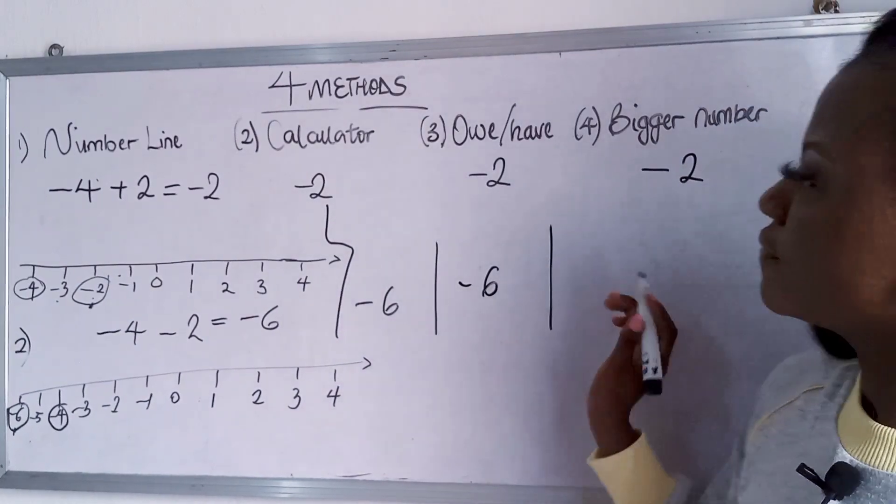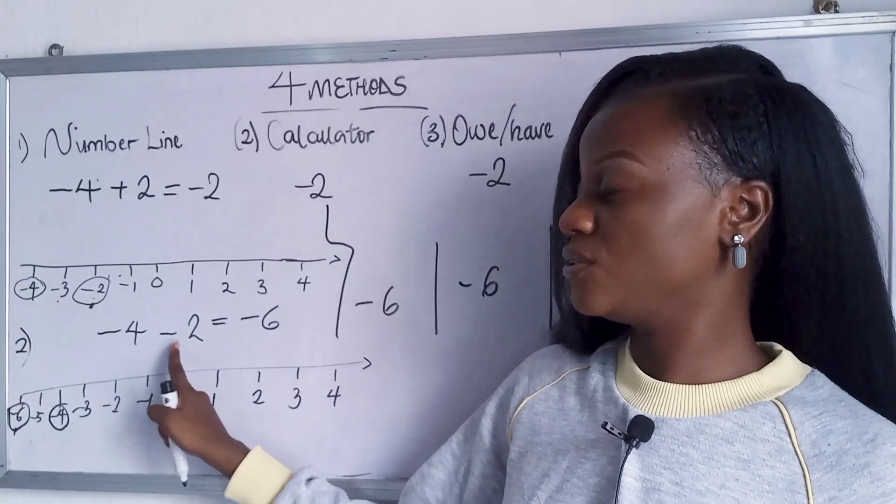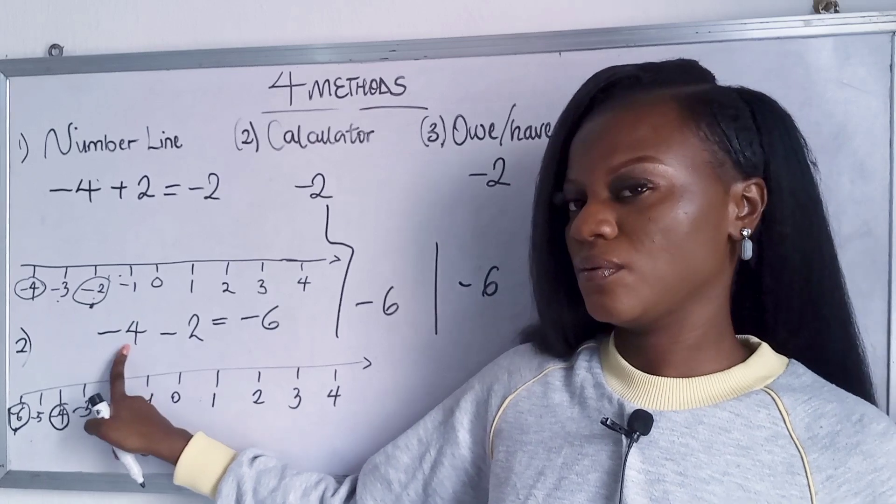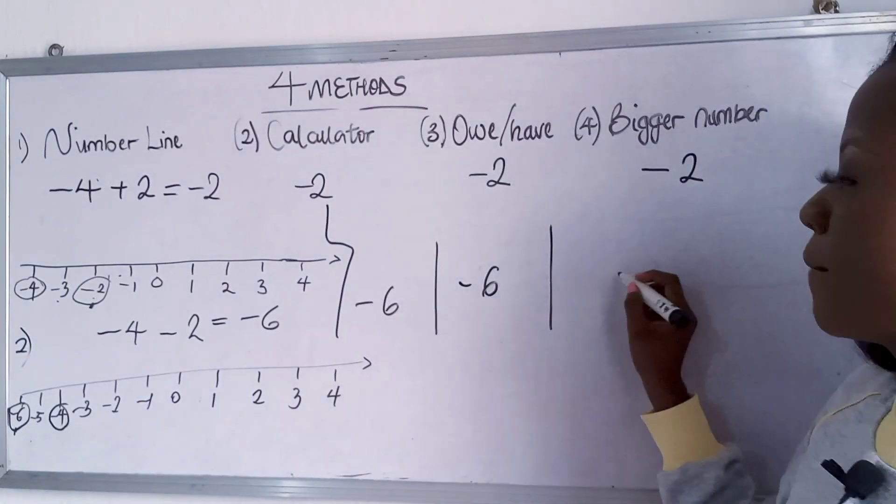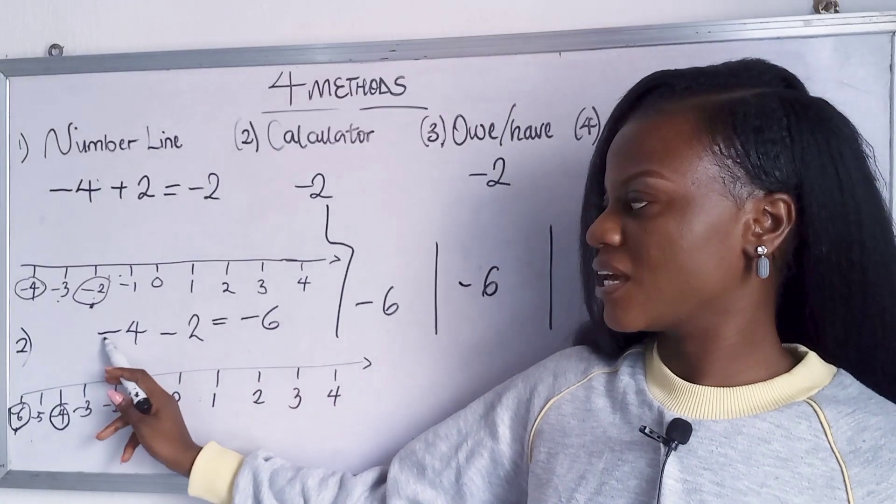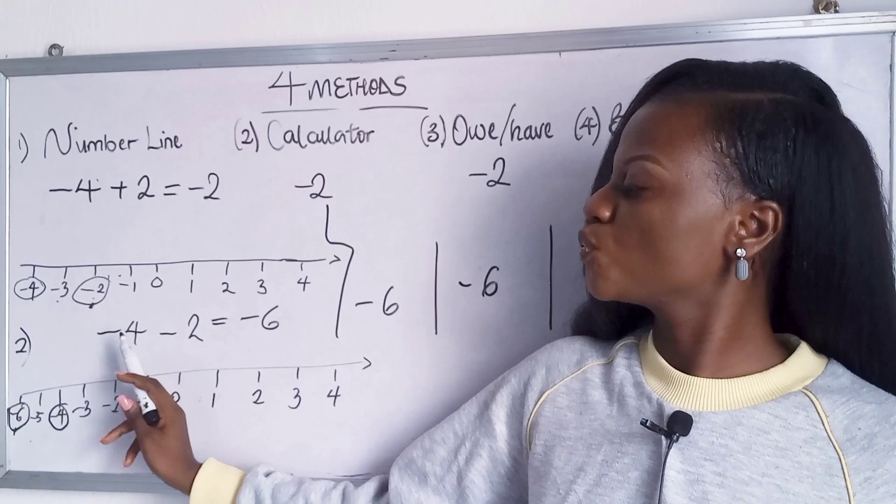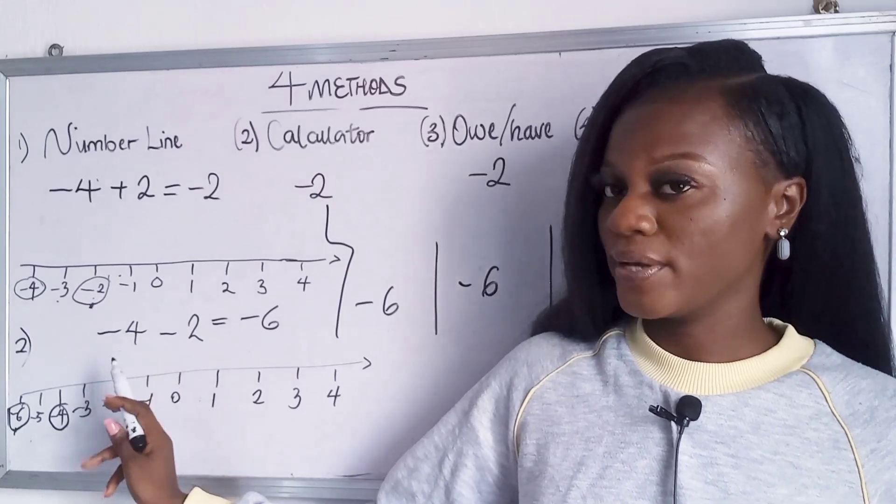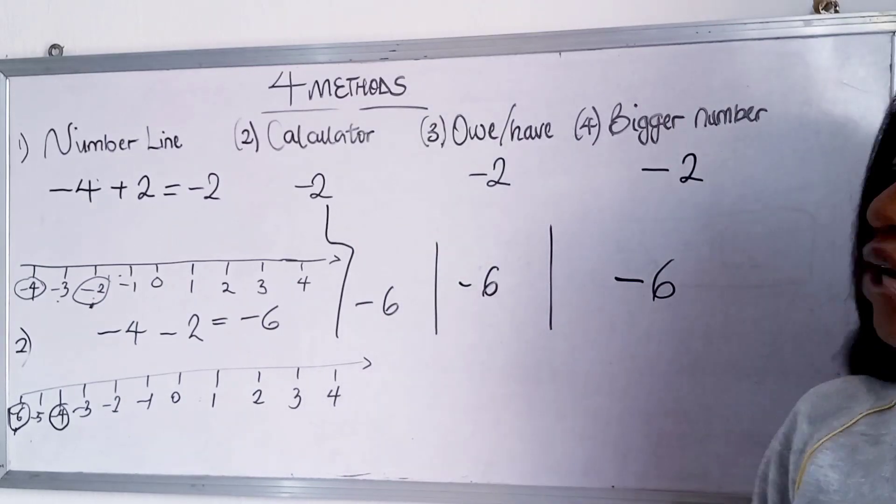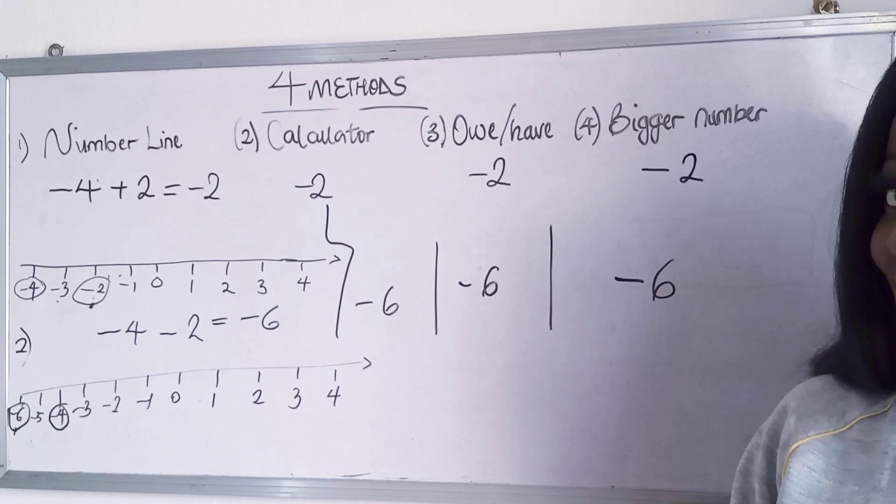And then for the last method which is your bigger number method. Which number is bigger? Is it four or two? Four is the bigger number and the sign in front of it is what? Minus. Right? And then we said multiply the sign. So minus times minus is what? Plus. So you are going to add the numbers which is four plus two. That's six. So I hope this method actually made sense.